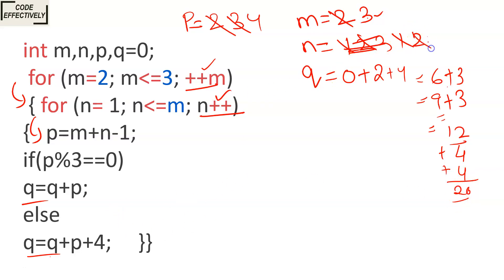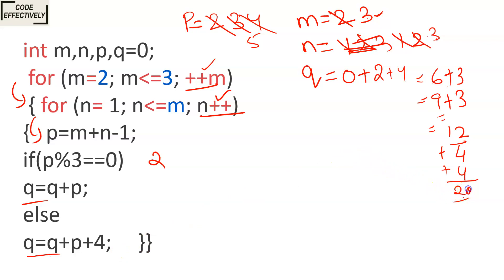The loop continues and N is now 3. 3 is less than or equal to M (which is 3), condition true. P equals M plus N minus 1: 3 plus 3 is 6, minus 1 gives P equals 5. 5 modulus 3 equals 0 — the remainder is 2, not 0, condition is false. So Q equals Q plus P plus 4: 20 plus 5 plus 4 gives Q equals 29.